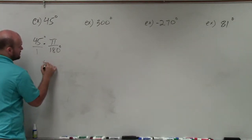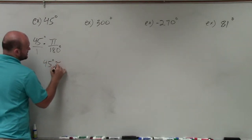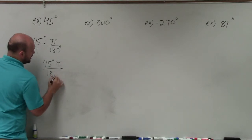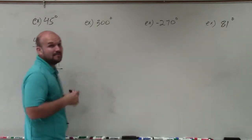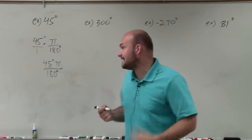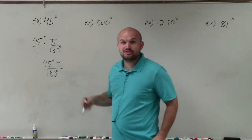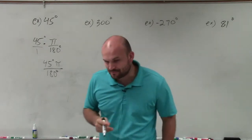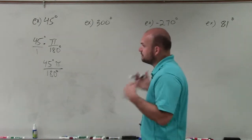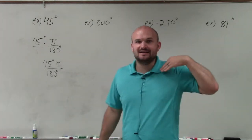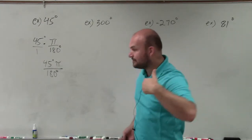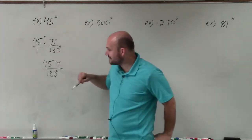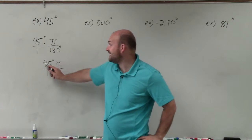So remember, when we multiply fractions, we have 45 degrees times pi divided by 180 degrees. Now, looking at this, we can see that my degree symbols are going to divide each other out, and then I can reduce 45 over 180. So remember, when reducing fractions, what we want to do is say, what number can divide the same in the numerator and in the denominator? Well, in this case, we know that 180 does not divide into 45.